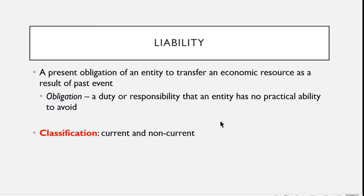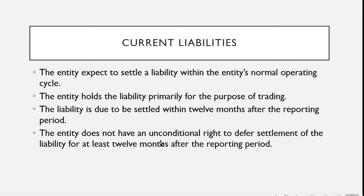The same with the asset, it can be classified as current and non-current. If we're going to classify it as current, any of the following should be present. The entity is expected to settle the liability within the entity's normal operating cycle. If the normal operating cycle is not clearly identifiable, we will use 12 months.